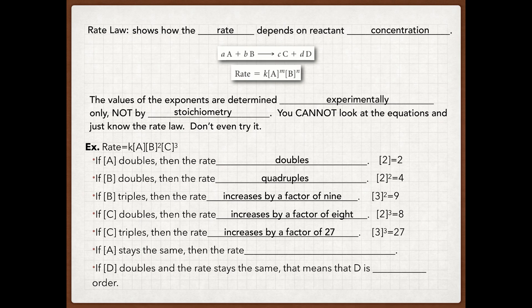What if A stays the same? If A doesn't change at all, that would be one raised to the first — your rate is not going to change. Now if I'm asking about D, a fourth reactant — notice it does not show up in your rate law. If D doubles, your rate's going to stay the same, which tells us that D is what we say to be zero order. Zero order means a change in its concentration is not going to affect the rate of that reaction at all, and therefore we do not include it in your rate law.